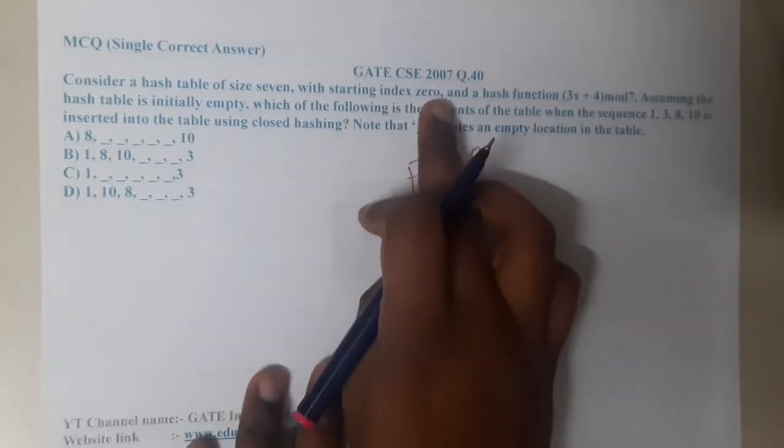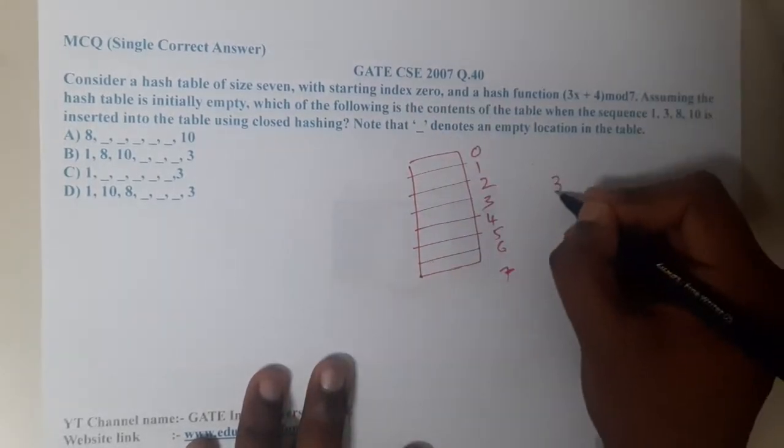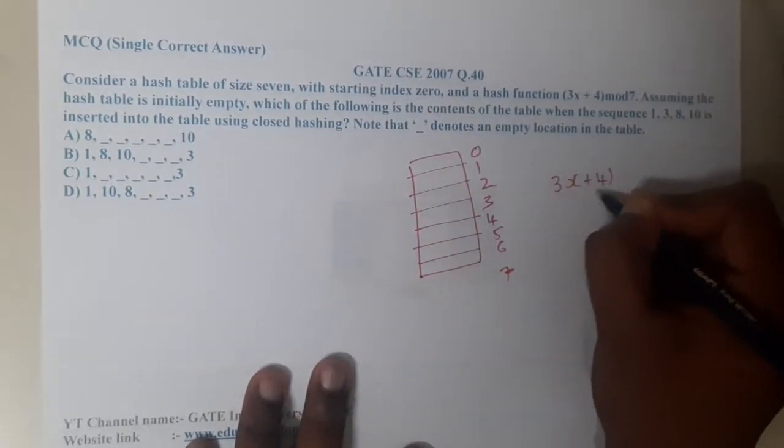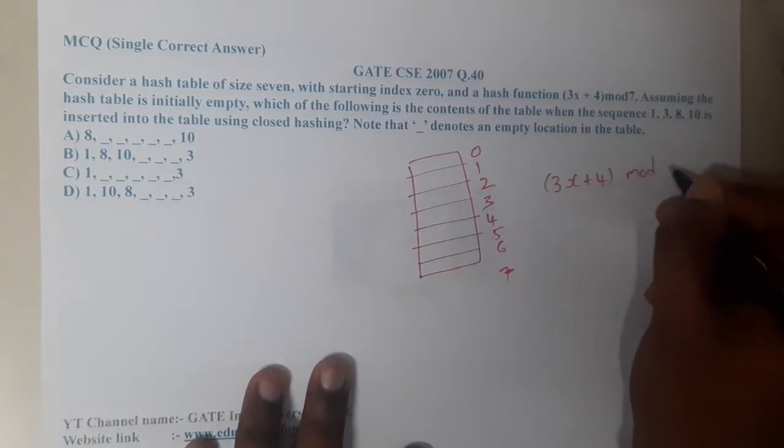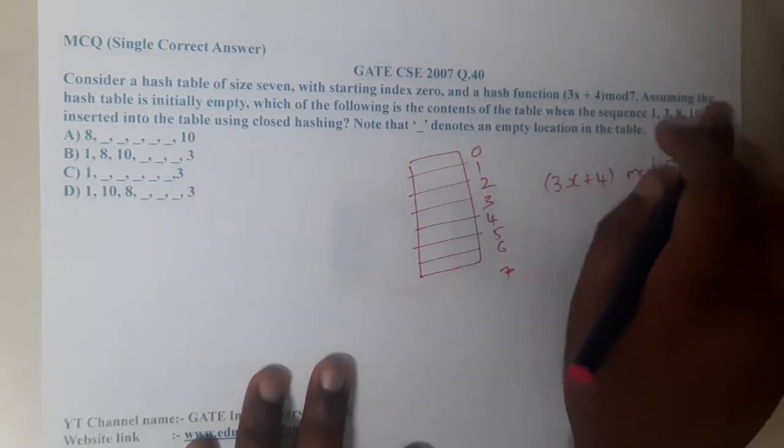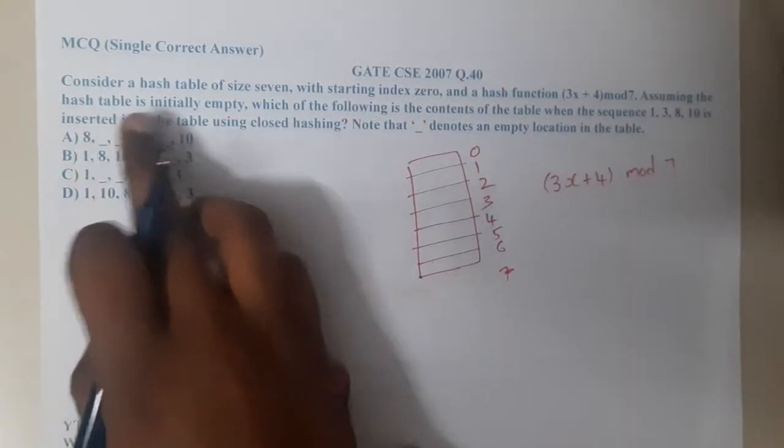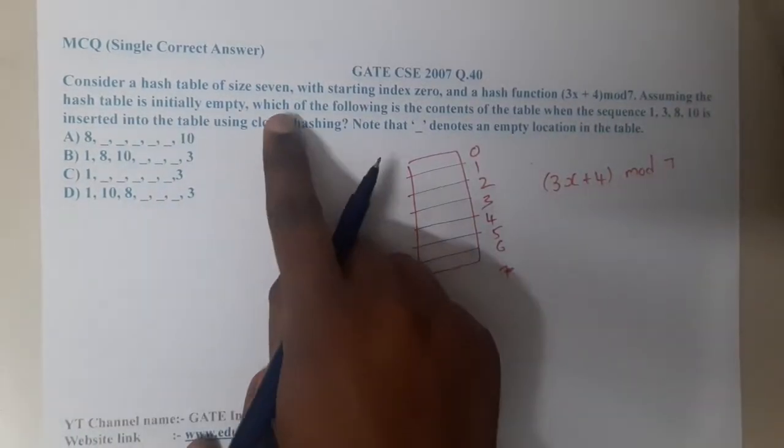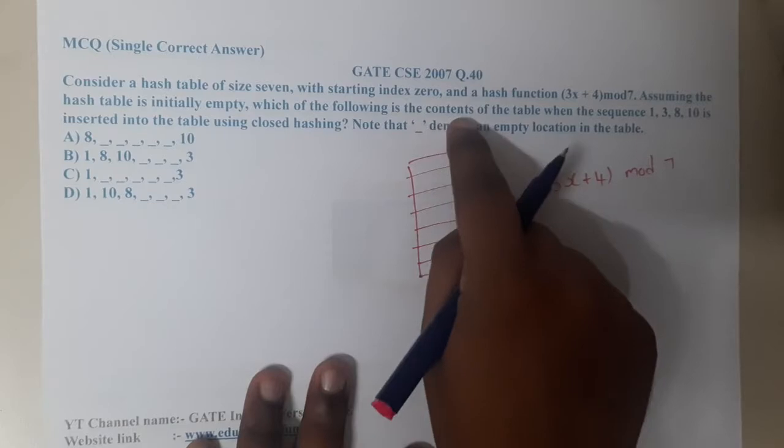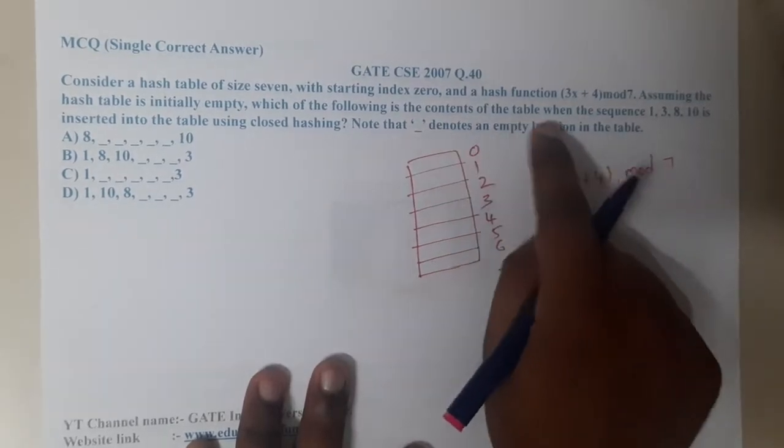Starting from index 0, the hash function is 3x + 4 mod 7. Assuming that the hash table is initially empty, which of the following is the content of the table when we insert 1, 3, 8, and 10 in the given insertion order?